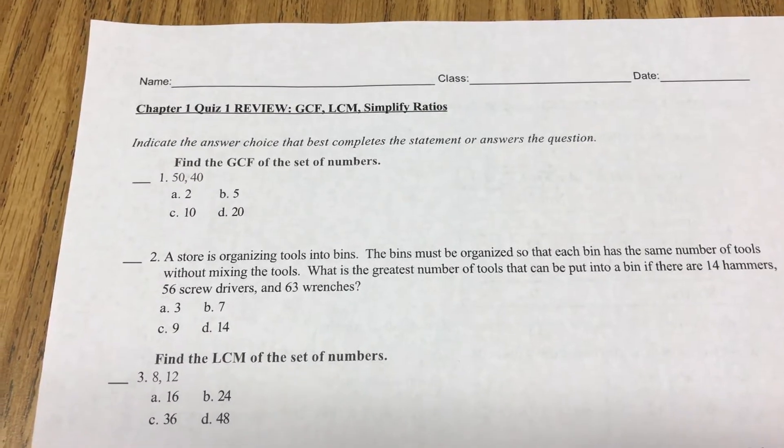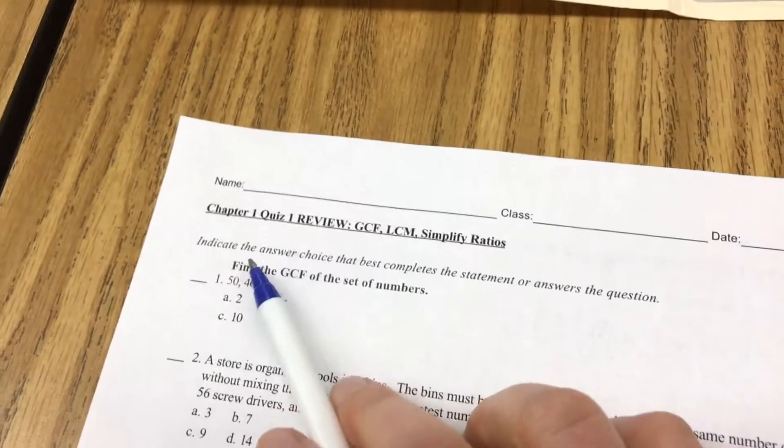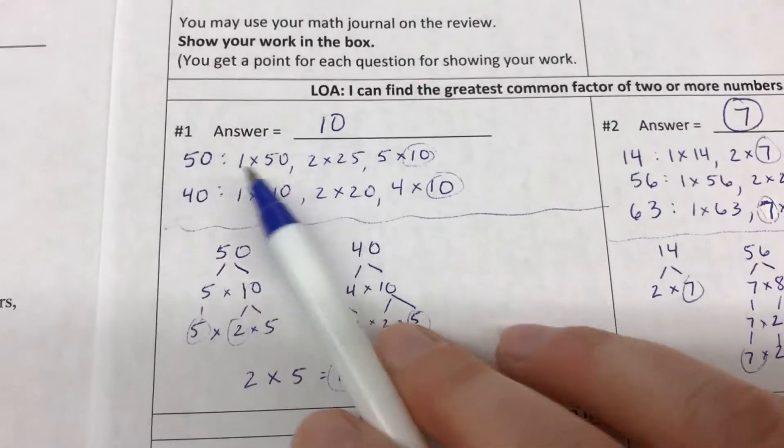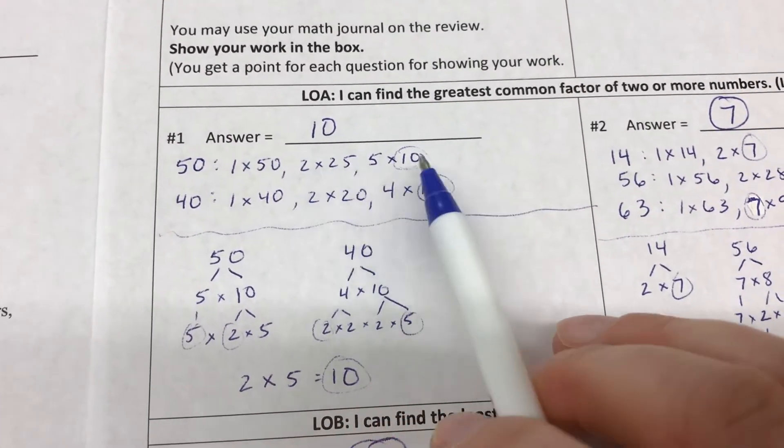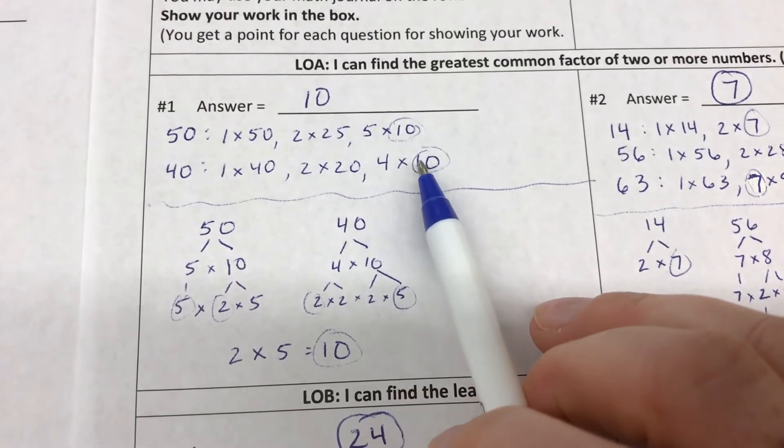Let's check our answers for the Quiz 1 Review. For 1 and 2, we're talking about finding the greatest common factor. In number 1, we had to find the greatest common factor of 50 and 40. If you did a list, you probably listed out all of these factors here and found 10 was the greatest.